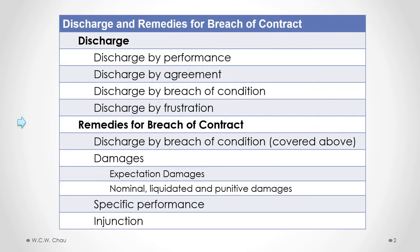We will now start examining the different types of remedies for a breach of contract. A remedy is what a court will provide as redress for that breach of contract. The first one on the Table of Contents is discharge by breach of condition, which we've already examined when we were talking about the different types of discharge, so we won't repeat that again here.